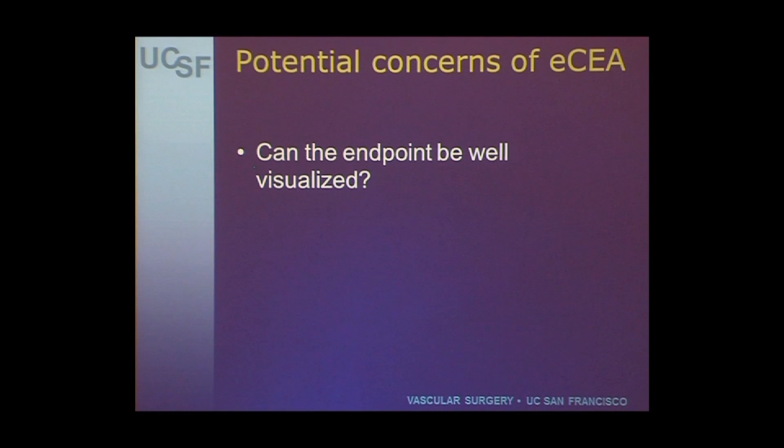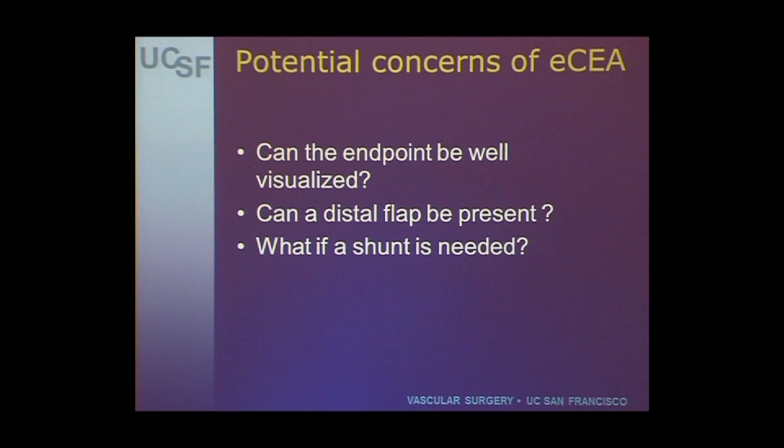What about potential concerns with eversion endarterectomy? Some feel it can be difficult to visualize the endpoint, or that a distal flap could be present but hard to detect once the eversion or reversion of the artery has been taken down. But because the stroke risk in most studies is low, I don't think that's a major issue. What about if a shunt is needed? That may be an issue, though the Italian authors showed they had no problem placing shunts. However, some people do feel that shunting eversion endarterectomies is a bit difficult or cumbersome.